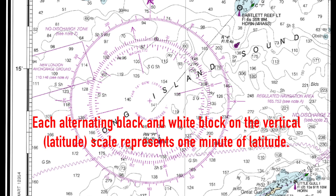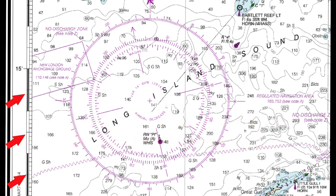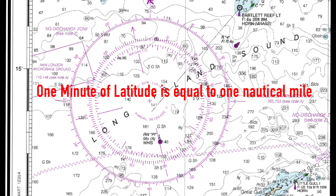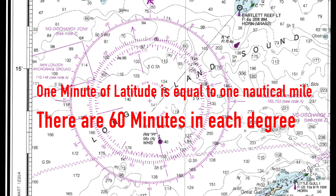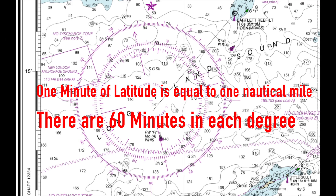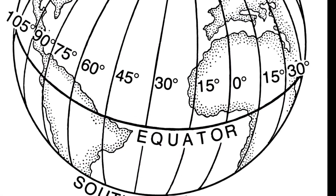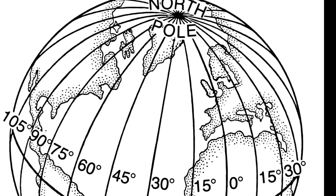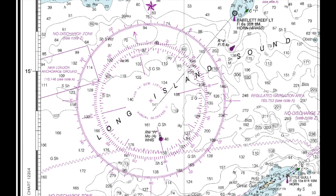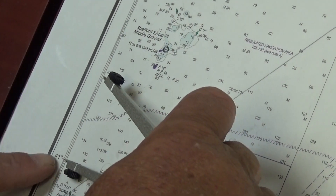Each of those alternating black-white bars on the vertical scale are called minutes and equal one-sixtieth of a degree. One nautical mile corresponds to one minute of latitude; thus, degrees of latitude are approximately 60 nautical miles apart. By contrast, the distance in nautical miles between degrees of longitude is not constant because lines of longitude become closer together as they converge at the poles. Distance on any chart can be easily measured by using a pair of dividers and either side of the latitude scale.